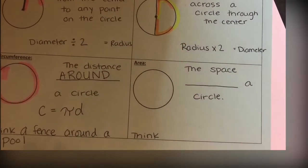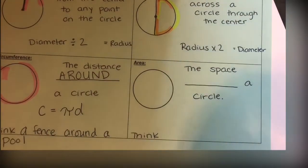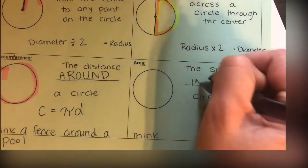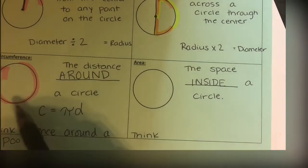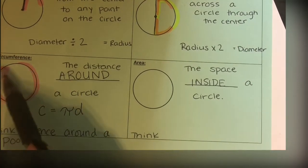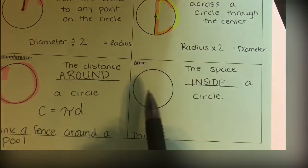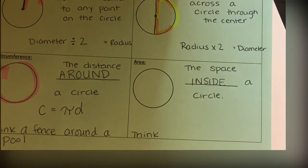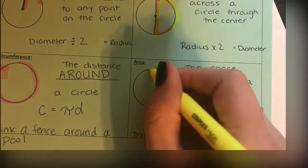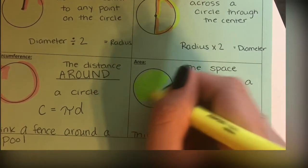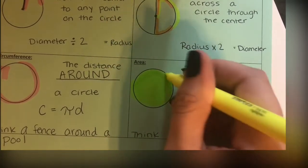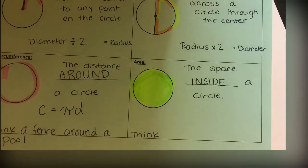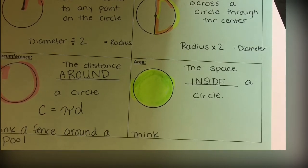Next, we'll be calculating area. Area is the space inside of the circle. Whereas circumference is like a fence around it—we're only doing what's around this line—area is what's inside of it. So if that's the fence around the pool, area is all the water in the pool. It's filling it in. I also like to think of this as icing a cake.